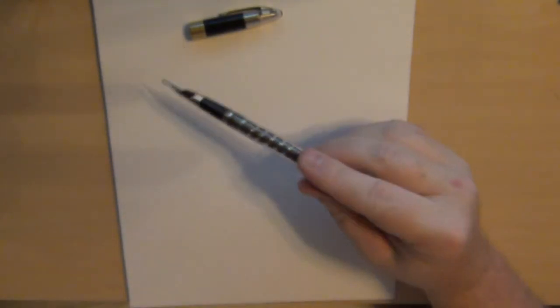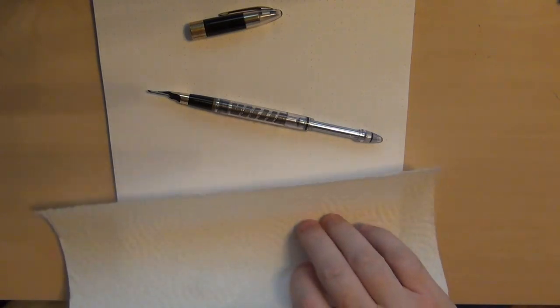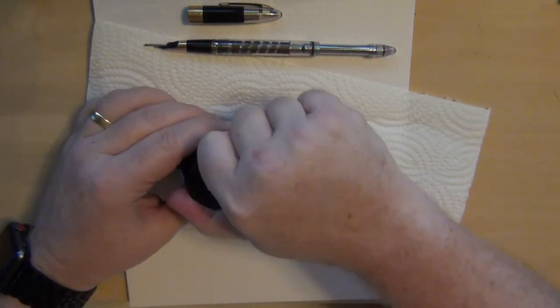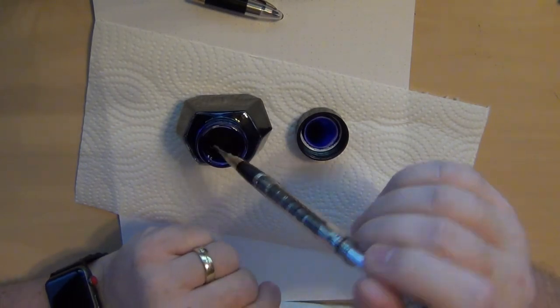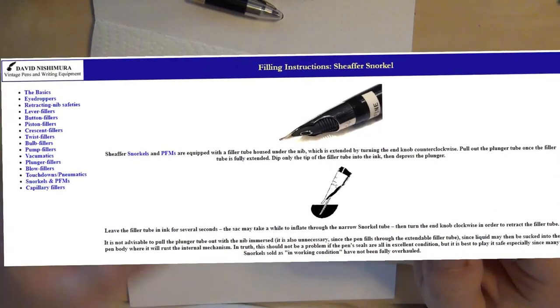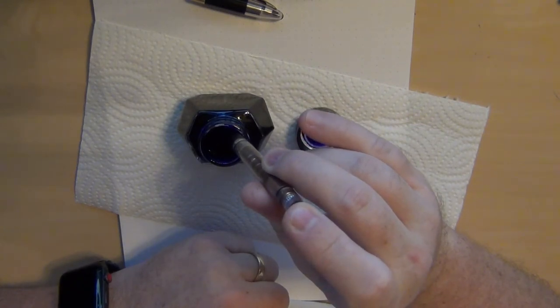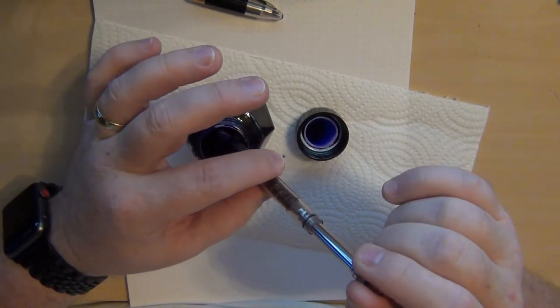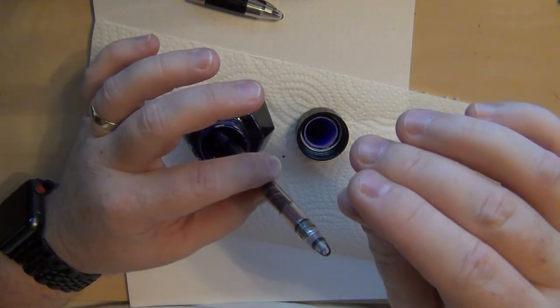Let's go ahead and fill this one up. Let me get some paper towel handy. I'll get out some of my Waterman Serenity Blue. The snorkel is extended. I'm going to put the snorkel down in the ink. The whole idea is that you don't have to get the nib down into the ink—that's the whole idea behind the snorkel. Let's get just the snorkel in. You hear that? I heard it aspirate. I'm going to do it again just so you can see.